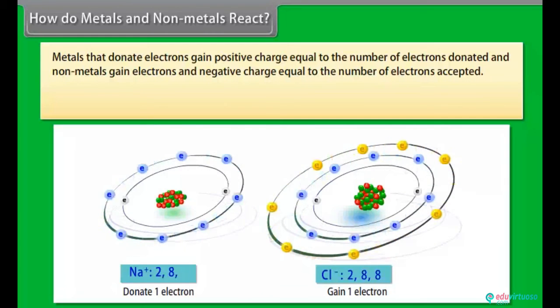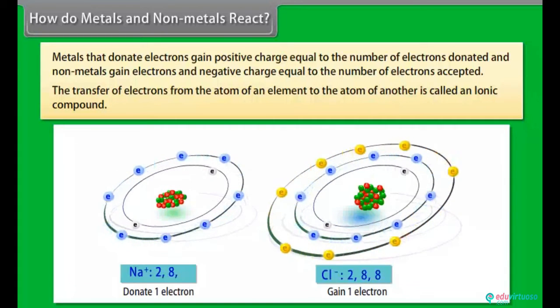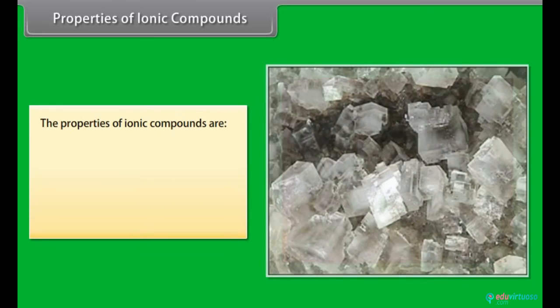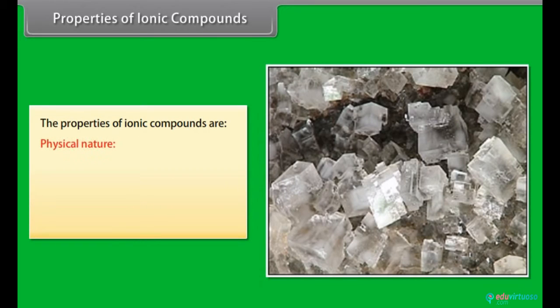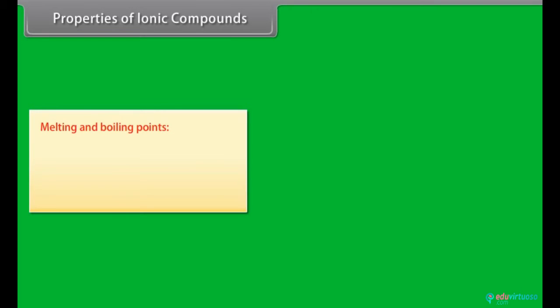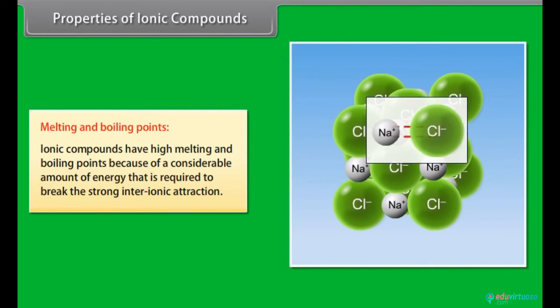As a result of this, both these atoms form the structure of an inert gas. The transfer of electrons from the atom of an element to the atom of another is called an ionic compound. Properties of ionic compounds. Let us look at some ionic compound properties. Physical nature. Ionic compounds are hard solids as the force of attraction between the positive and negative ions is very strong. These compounds are brittle and break when pressure is applied. Melting and boiling points. Ionic compounds have high melting and boiling points because of a considerable amount of energy that is required to break this strong inter-ionic attraction.